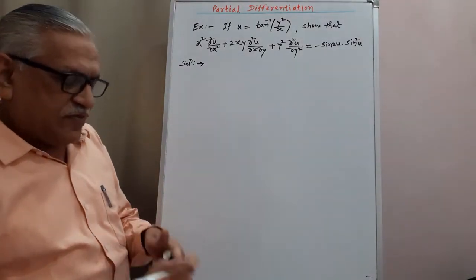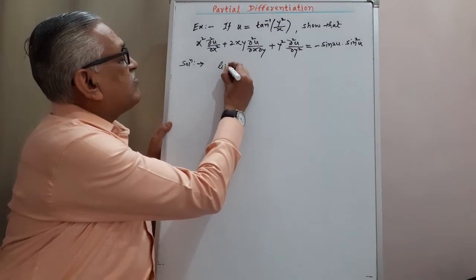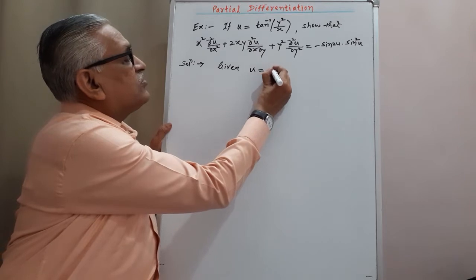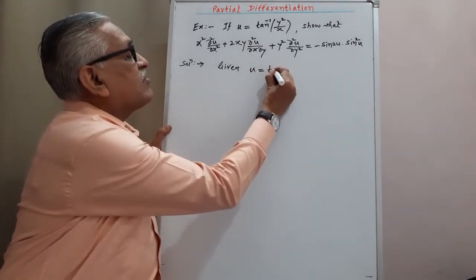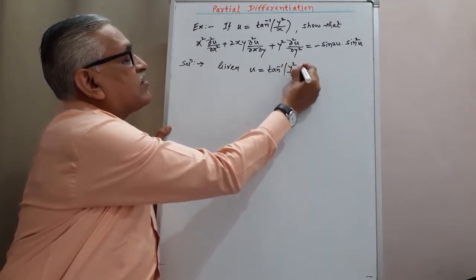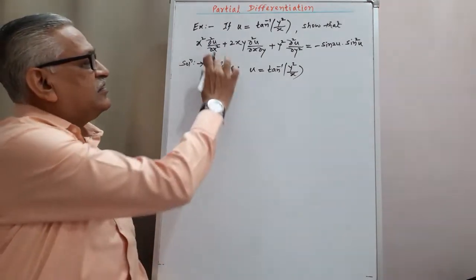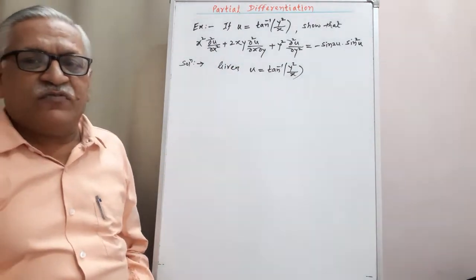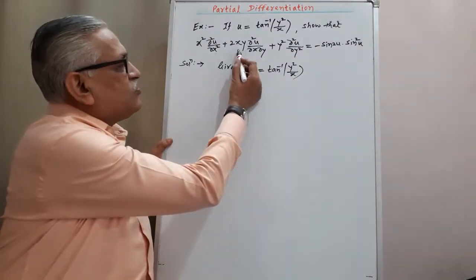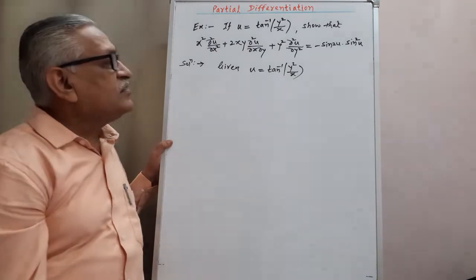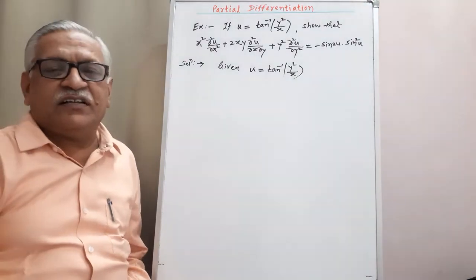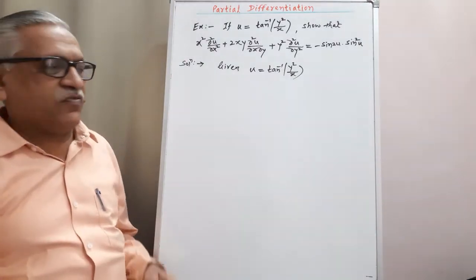Here, given is u = tan⁻¹(y²/x) and we require to obtain this result. If you observe the terms from this result — x² ∂²u/∂x² + 2xy ∂²u/∂x∂y + y² ∂²u/∂y² — this type of term appearing means it becomes a problem of Euler's theorem on homogeneous equations.